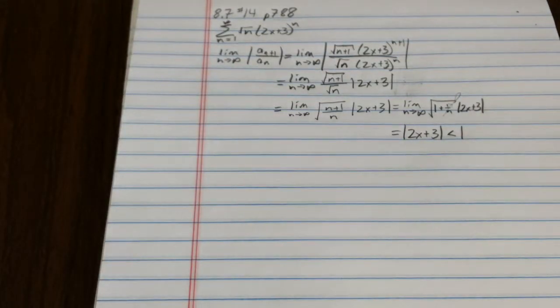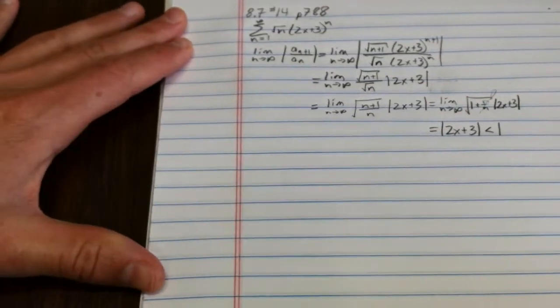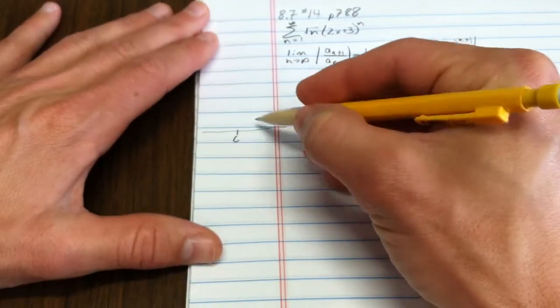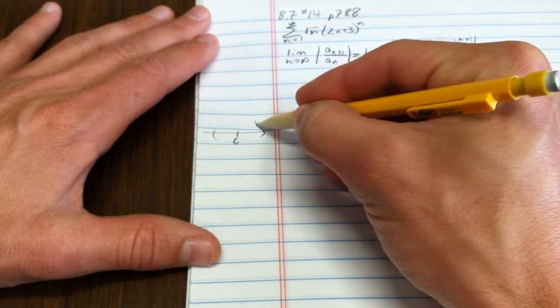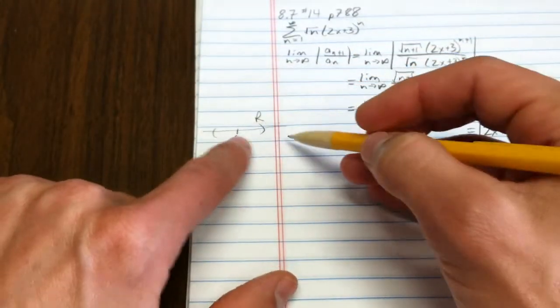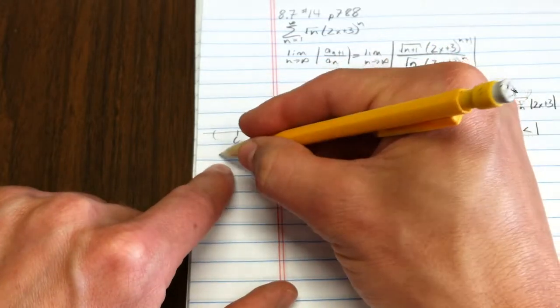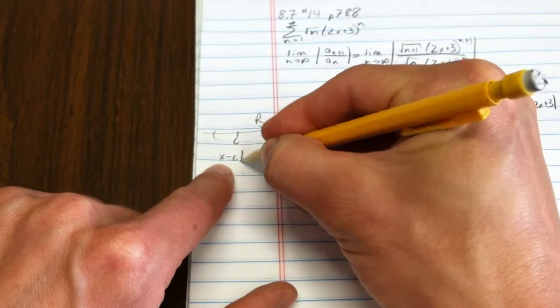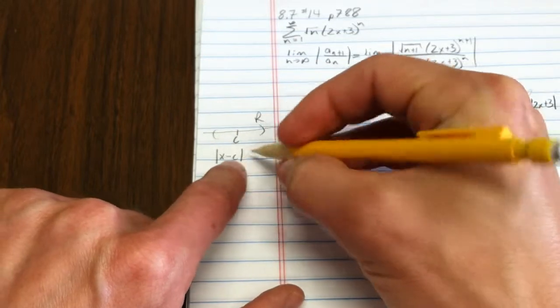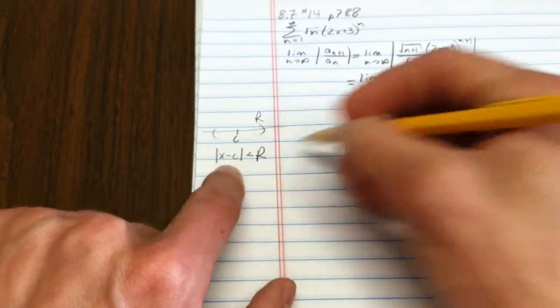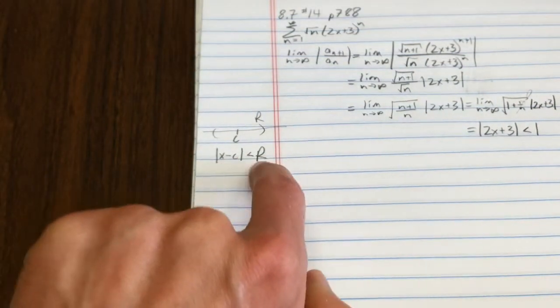So I'm trying to find the radius of convergence. Now remember, in general, if you have sort of a number line and it's centered at a value c and I want a radius of r, how do I get points x that are within r of c? You say the distance between x and c is less than r. So you can see the center, you can see the radius.